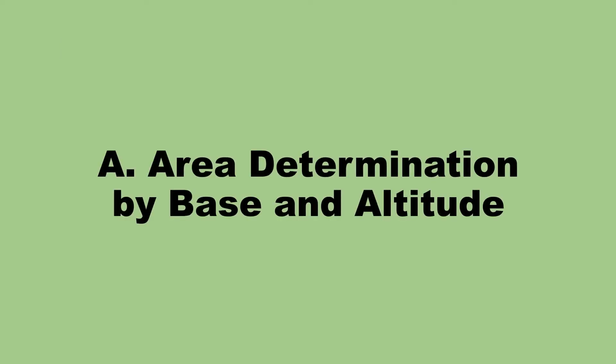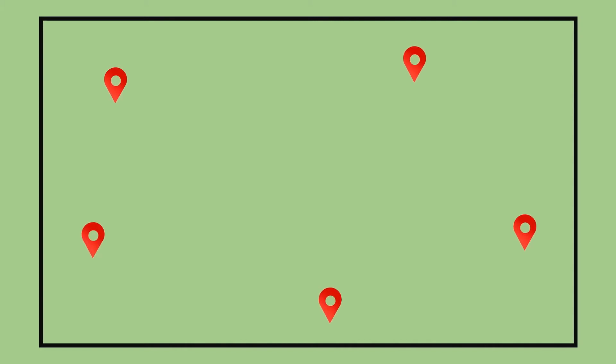Part A: Area Determination by Base and Altitude. Step 1: The instructor assigns the locations of 5 points in the field and the students will mark these points with marking pins or chalk. Name these points, which will serve as the corners of the polygon, as A, B, C, D, and E.